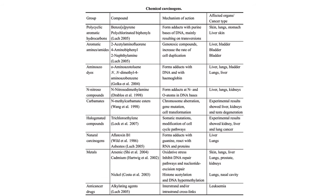Examples of chemical carcinogens include polycyclic aromatic hydrocarbons, aromatic amines, aminoazo dyes, and nitroso compounds. Exposure to these chemicals may lead to the development of cancers.